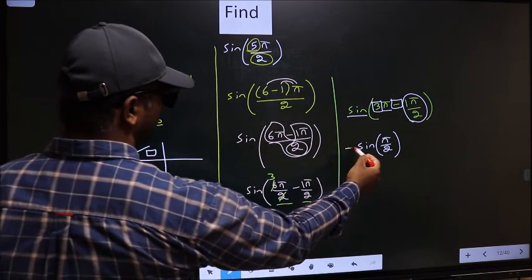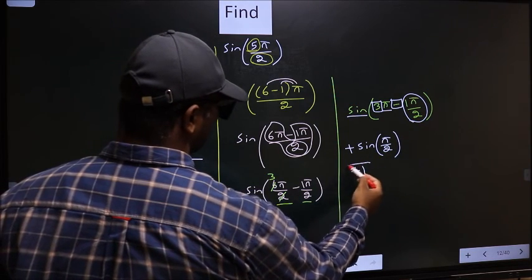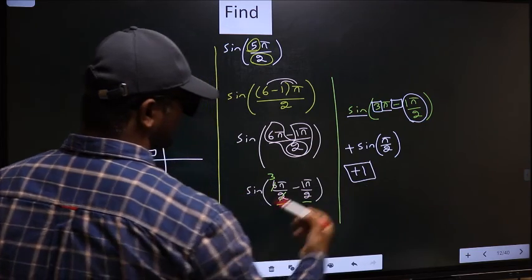So you put plus. So plus sin π/2 is 1. So this is our answer.